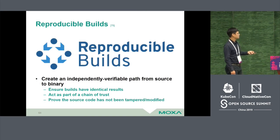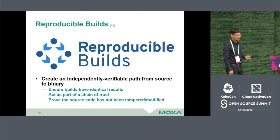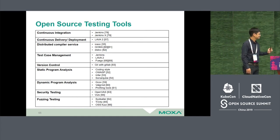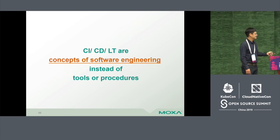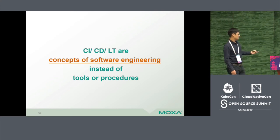The next is reproducible builds — a very amazing open source project. It creates an independent, verifiable path from source to binary, ensures builds have identical results, and allows us to prove that the source code has not been tampered with or modified. This is very important for security. CI, CD, and long-term testing are concepts of software engineering rather than just tools or procedures, because tools and procedures could be phased out — we need to focus on the software engineering principles.